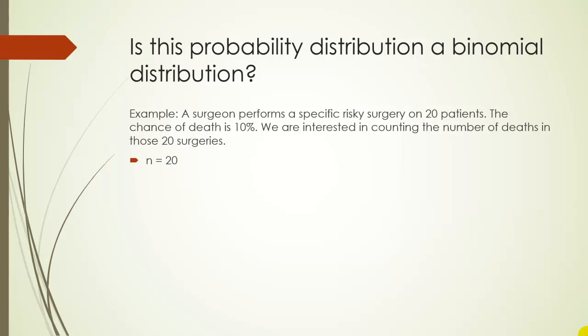So to go through this, if it's binomial, there has to be a set number of trials. Well, we have 20 patients, so n would be 20. X, we're counting the number of deaths. So since we're counting the number of deaths, death has to be considered a success. Obviously, this is only in statistical terms. A surgeon would not consider a patient dying as a success, but statistically we call it a success because that's what we're counting.